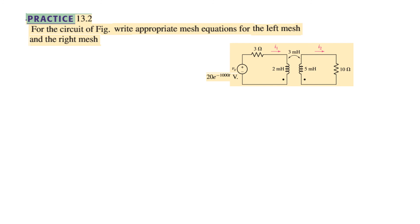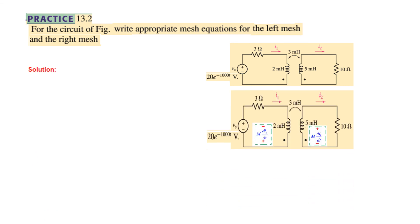For practice problem 13.2, we only need to write the appropriate mesh equations for the left and right meshes — no phasor conversion is required. We first find the induced voltage on the left side: because current I2 enters the dot, the lower (dotted) end is positive and the upper end is negative, so the mutually induced voltage is +M·di2/dt with that polarity.